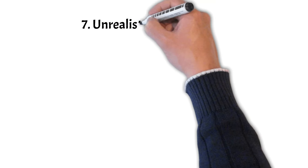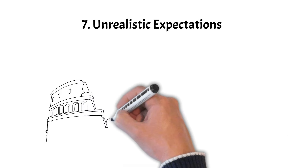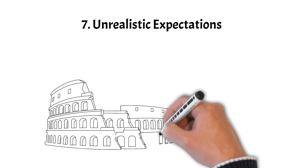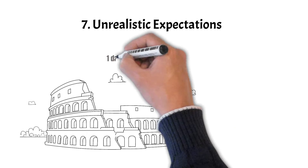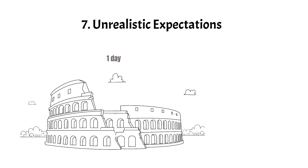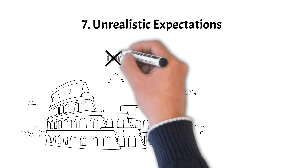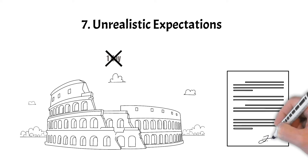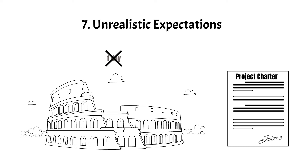Pitfall 7: Unrealistic expectations. Setting overly ambitious project goals and timelines may seem inspiring, but it can put excessive pressure on the team and lead to burnout. Unrealistic expectations can also create an atmosphere of dissatisfaction when project milestones are not met. To counter this pitfall, set realistic and achievable goals, ensure that project timelines are feasible, align expectations with available resources and capabilities, and make sure project deliverables and timelines are approved by the project sponsor.